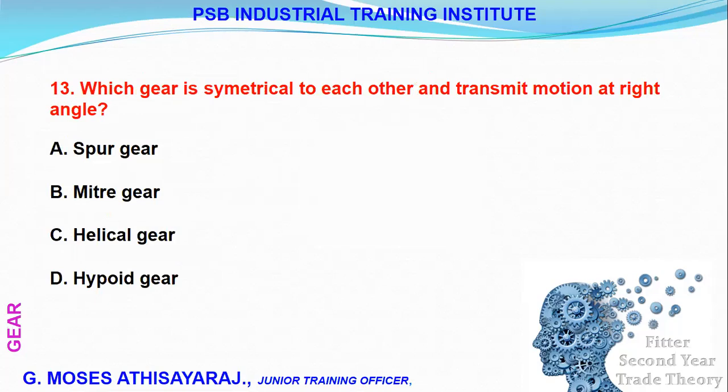The bevel gear is symmetrical to each other and transfers motion at a right angle. This is a miter gear, used to transfer motion at right angles.